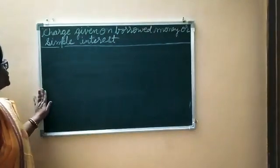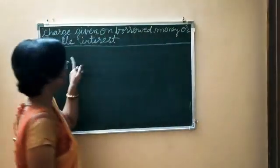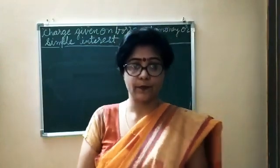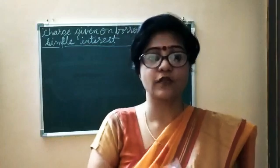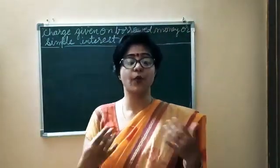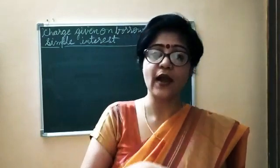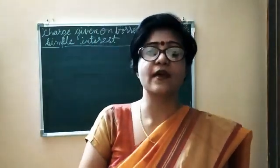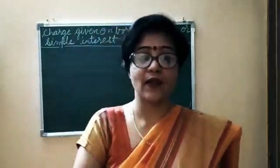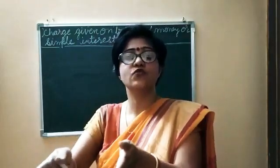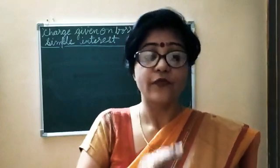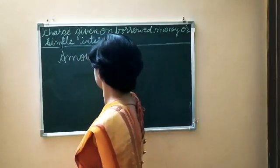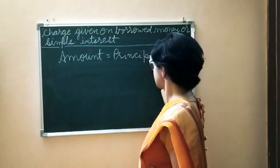Now we are going to see charge given on borrowed money, or simple interest. Raju wants to buy a car by taking a loan from the bank. The amount which he is borrowing is known as principal. For the amount borrowed, used over a period of time, he has to pay some extra money to the bank — this extra money is known as interest. The borrowed money plus interest to be paid back is known as amount. So amount equals principal plus interest.